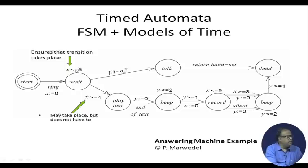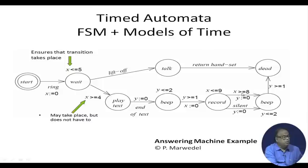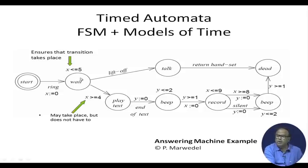In timed automata, we add extra variables representing time. At different points we can say it will be in the wait state for at least 5 units of time. This is a model of an answering machine — after recording, it will record for up to 8 units of time and then stop. If in between it becomes silent, the timer is reset. So we can associate timing parameters with our automata.